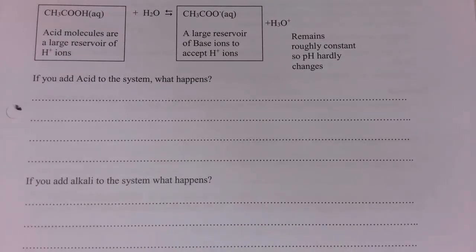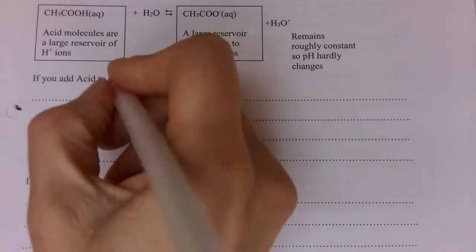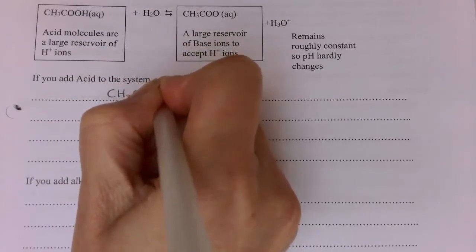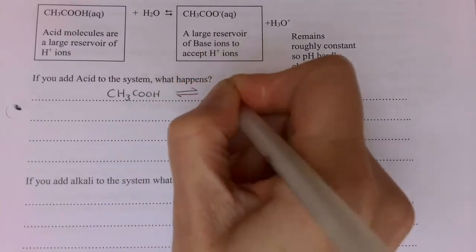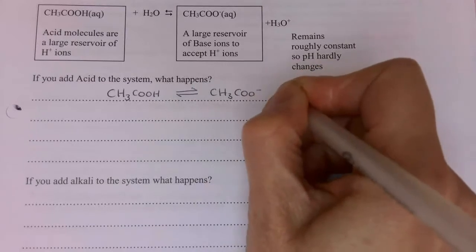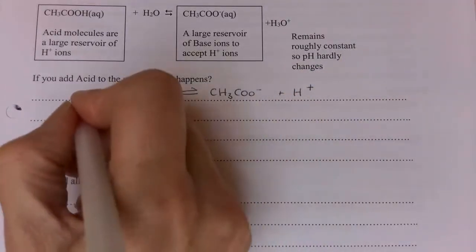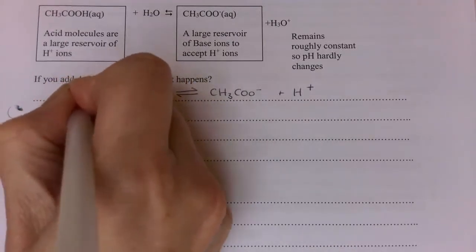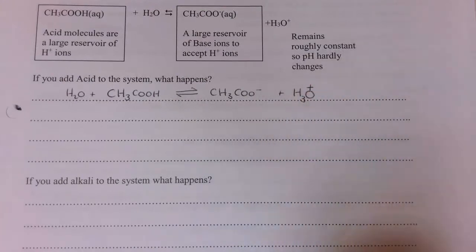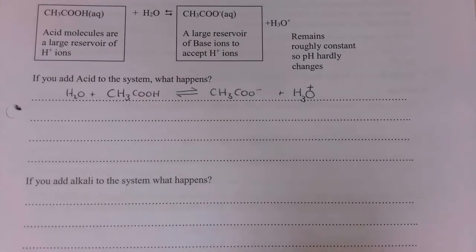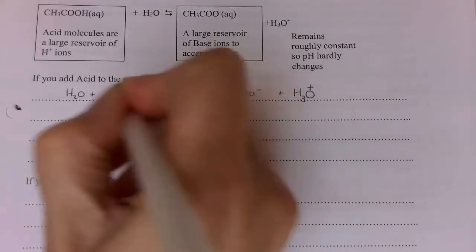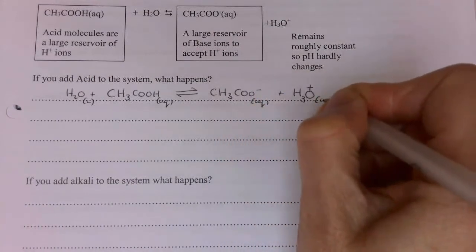A typical exam question would ask what happens when you add acid to a buffering system. The buffer system I'm going to consider is ethanoic acid in equilibrium with its salt, and remember I've got both of those present for my buffer. I'll write down the equation: CH₃COOH in equilibrium with CH₃COO⁻ and H⁺ ions. You could instead add water and get H₃O⁺ — both are correct. Let me add state symbols.